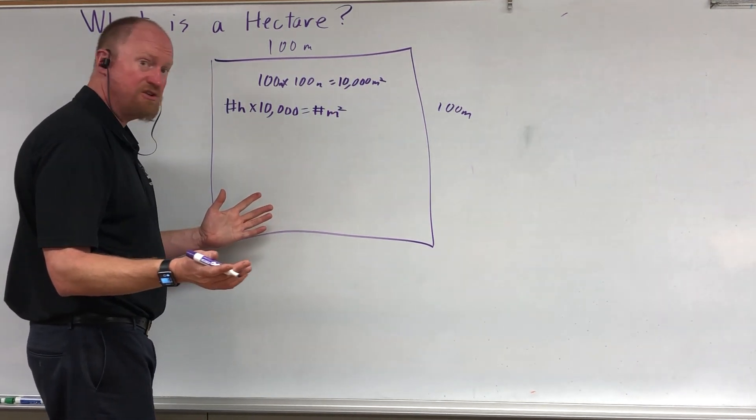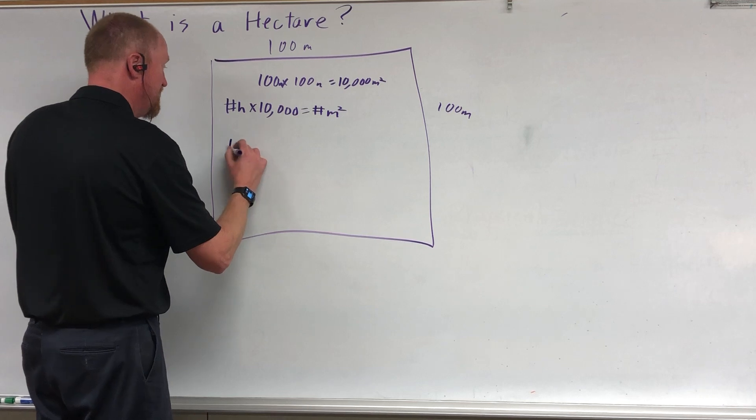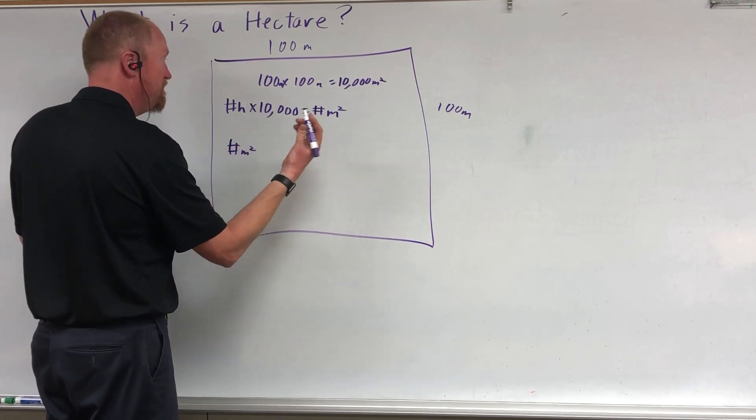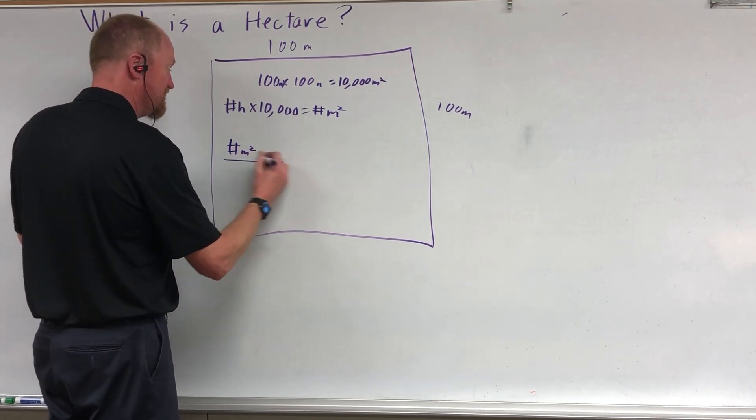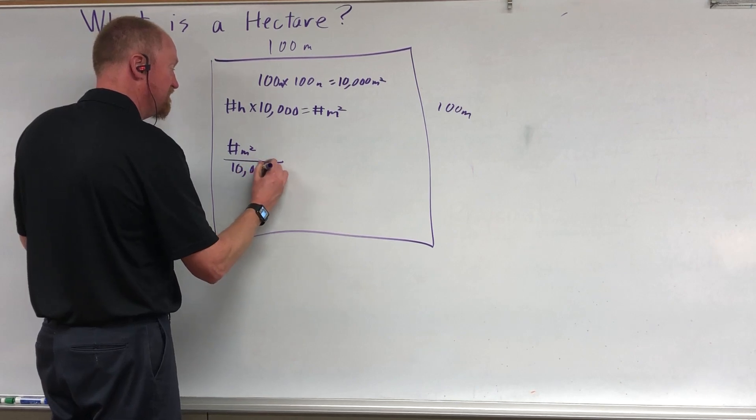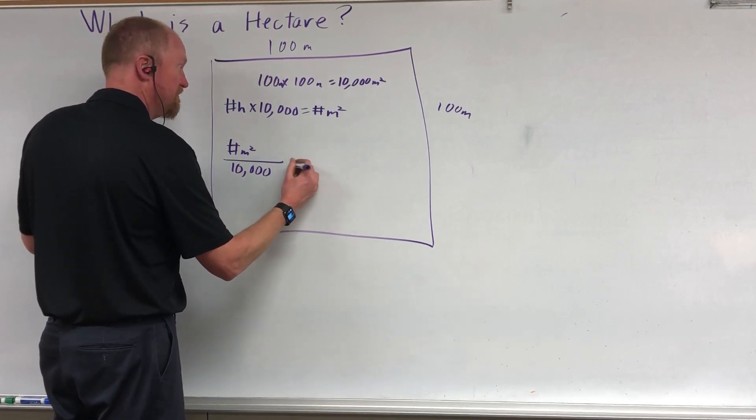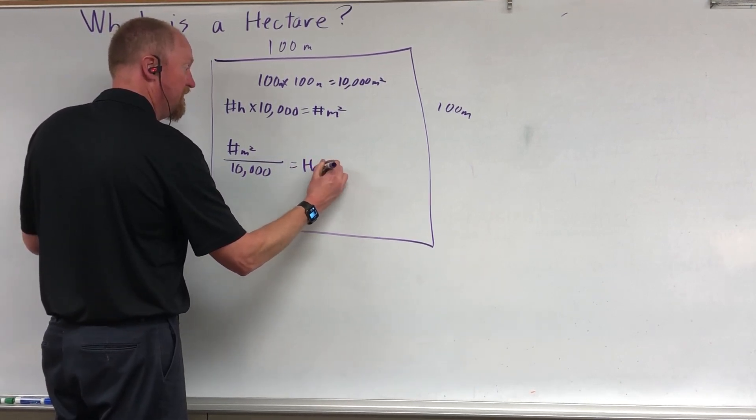To convert meters into hectares, you just do the opposite. You start with the number of meters squared and you divide it by 10,000 to get the number of hectares.